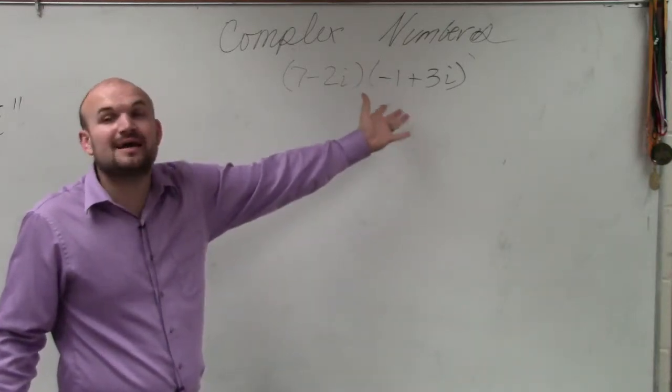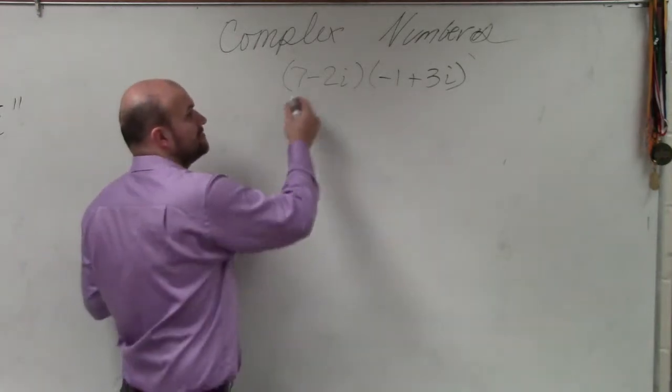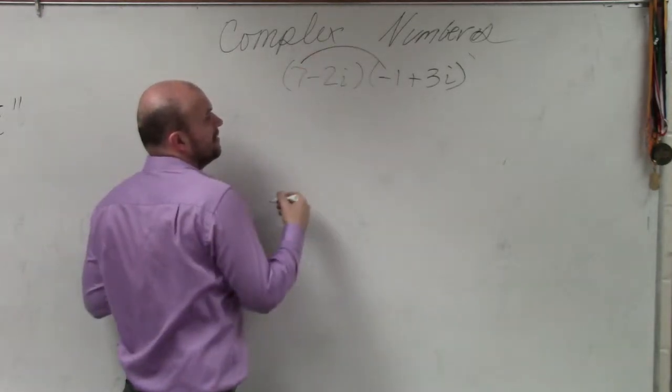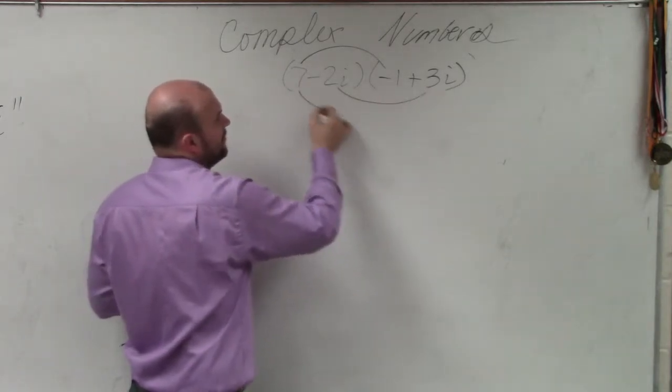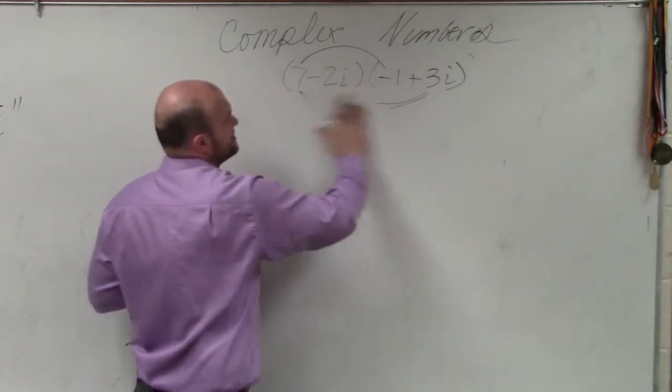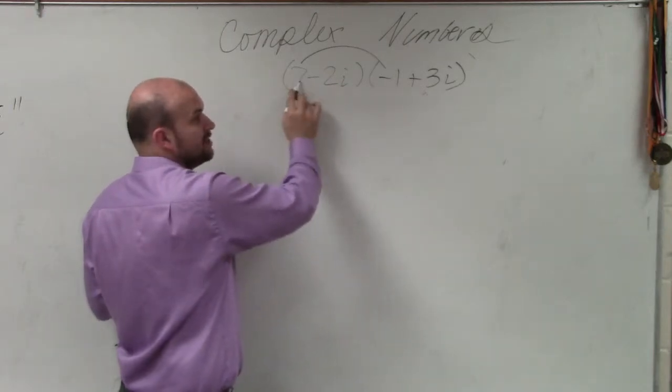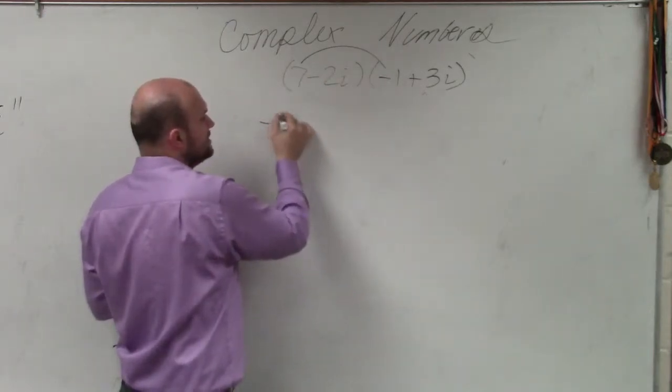So you're going to multiply everything. You can use FOIL, box method, whatever you feel comfortable with. If you're going to do FOIL, you do first. Let's do it one at a time. First terms, 7 times negative 1 is negative 7.